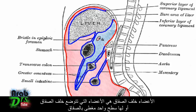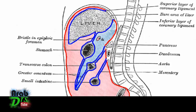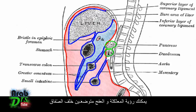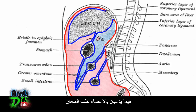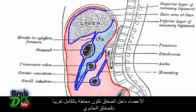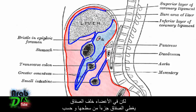Retroperitoneal organs are organs which lie behind the peritoneum or just have one surface covered by peritoneum. You can see the pancreas and the duodenum — these lie behind the peritoneum, so they've got only one surface covered by the parietal peritoneum, and they're called retroperitoneal organs. Intraperitoneal organs are completely or almost completely surrounded by visceral peritoneum, whereas retroperitoneal organs only have a part of their surface covered by peritoneum.